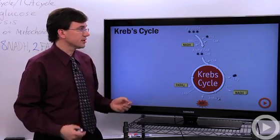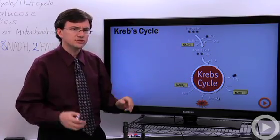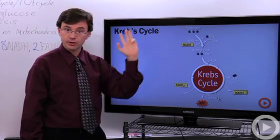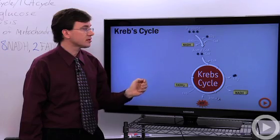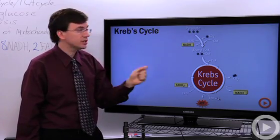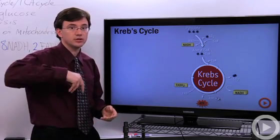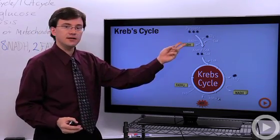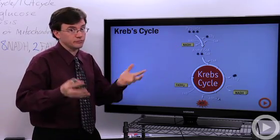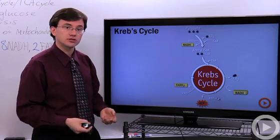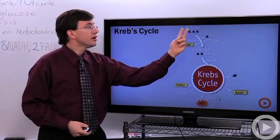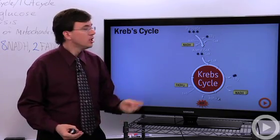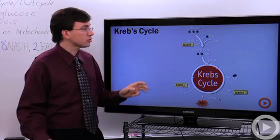Let's take a closer look at the Krebs cycle. I've simplified a lot of the steps because most teachers don't have you memorize each molecule's name. In general, pyruvate from glycolysis out in the cytoplasm, as it starts to enter the mitochondria, enzymes will rip off a couple of high-energy electrons and put them onto an electron carrier called NAD positive. You add two electrons, it becomes negatively charged, then grabs a nearby positively charged hydrogen ion and becomes NADH — a full high-energy electron carrier. One carbon falls off, leaving a two-carbon group called an acetyl group.